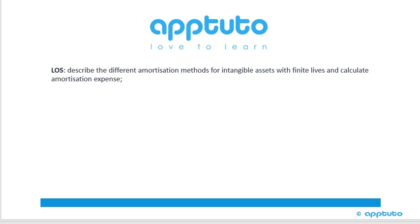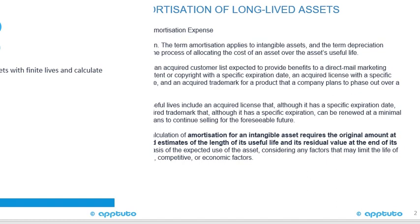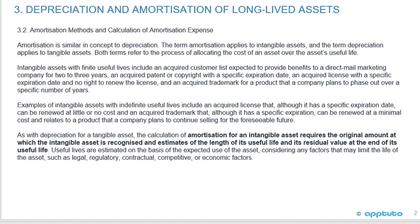This LOS is to describe the different amortization methods for intangible assets with finite lives and calculate amortization expense. Now we're carrying on with the amortization methods and calculation of amortization expense, under the broader topic of depreciation and amortization of long-lived assets.